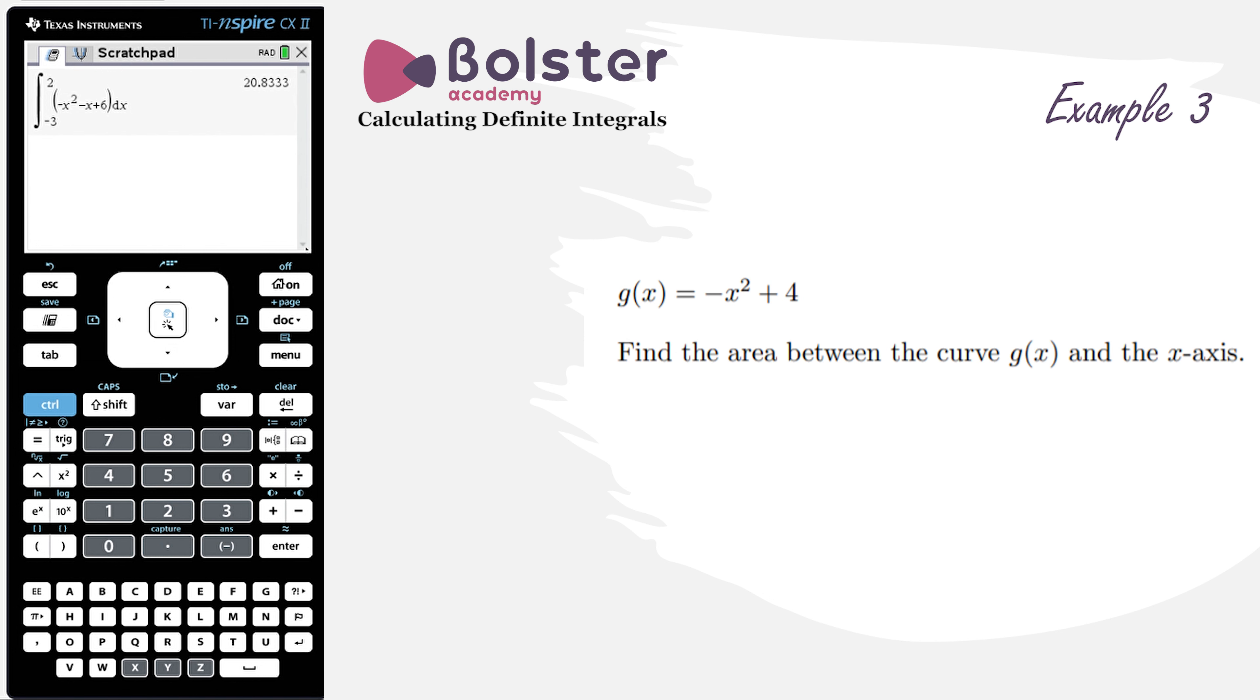Okay, so let's look at this final example question here now. We've got g of x is equal to minus x squared plus 4, and we're asked to find the area between the curve g of x and the x-axis.